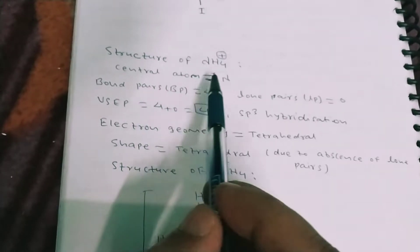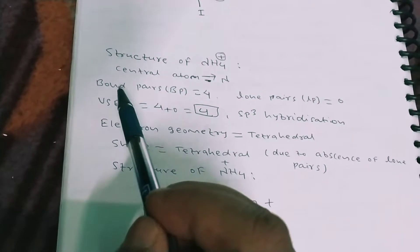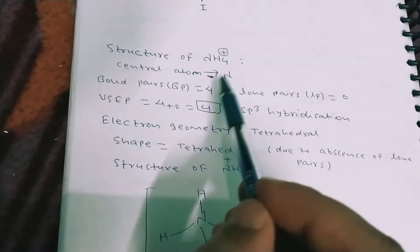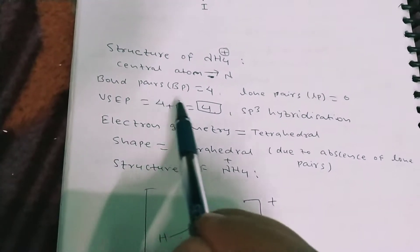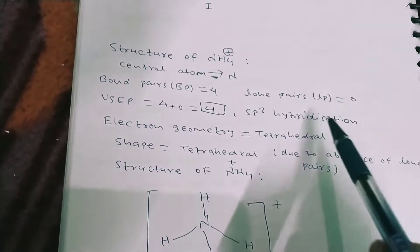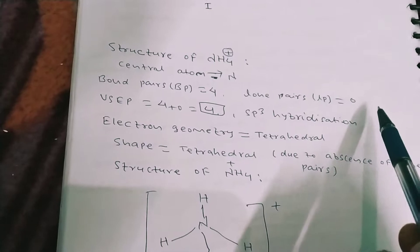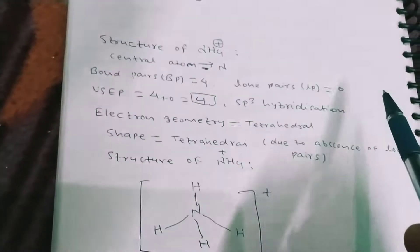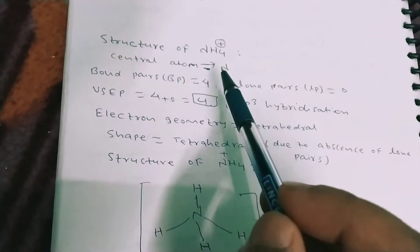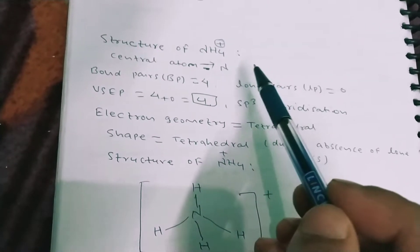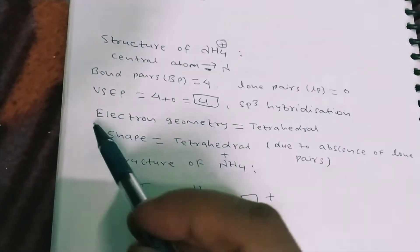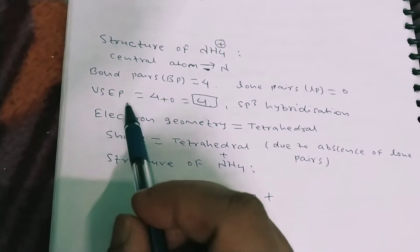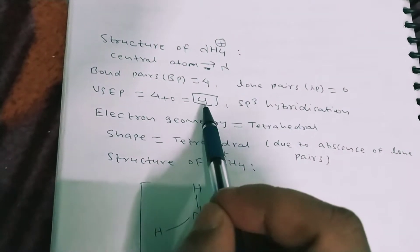Structure of NH4+ ammonium ion: the central atom is nitrogen, bond pairs equal to 4, and lone pairs equal to 0 because all electrons are bonded with hydrogen. Total electron pairs equal to bond pairs plus lone pairs, which equals...